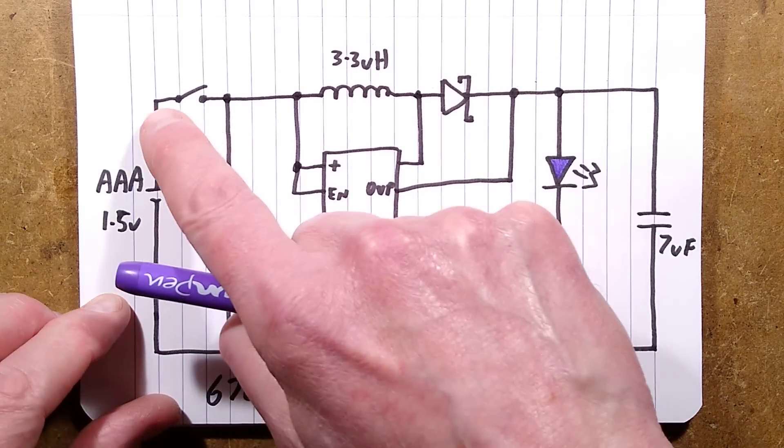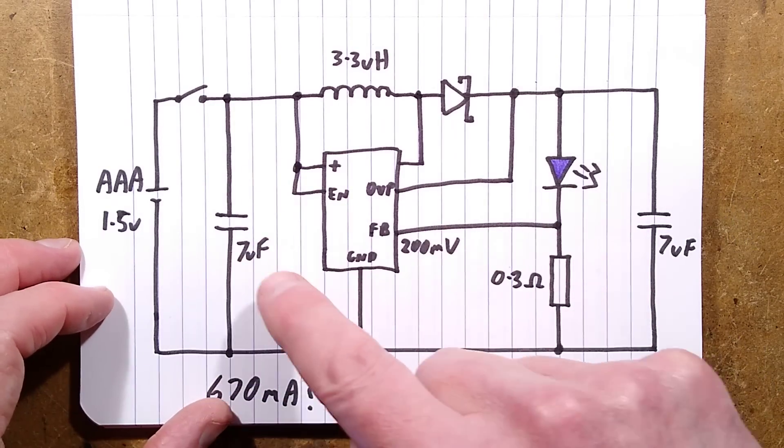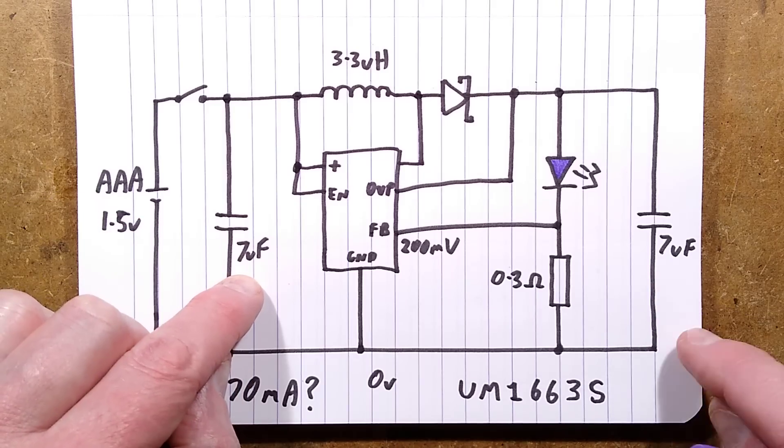Here's the AAA cell. There is the switch, the clicky switch at the back for turning it on and off. There is a capacitor. I measured both capacitors in circuit and they showed 7 microfarad in circuit. They could be 6.8 microfarad.